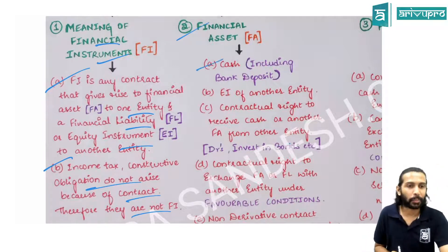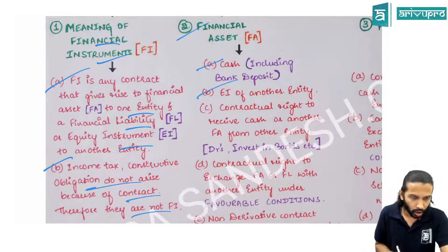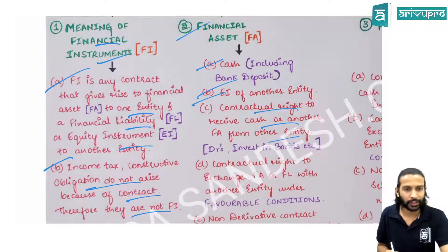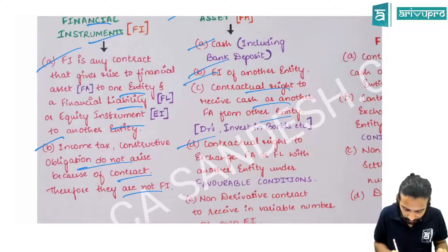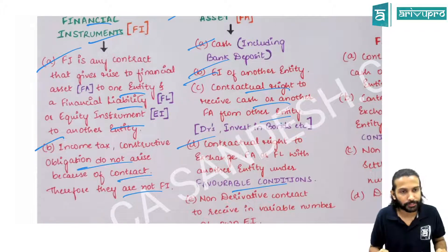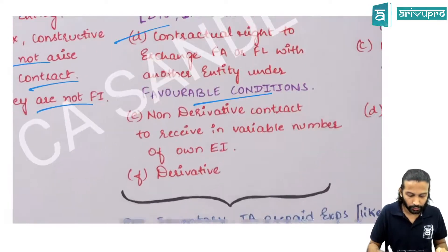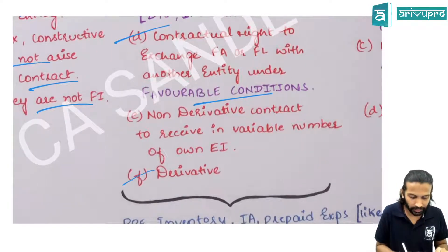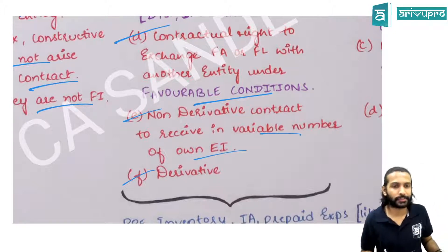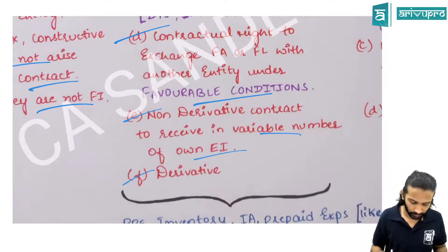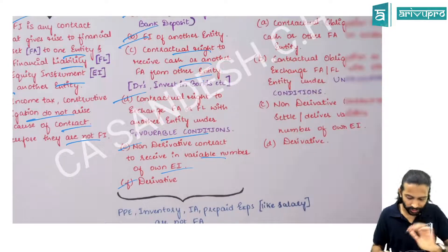A financial asset has six features: cash including bank deposits; equity instruments of another entity; contractual right to receive cash or any other financial asset; right to exchange financial asset or financial liability under favorable conditions; a derivative; and the right to receive a variable number of own equity shares.